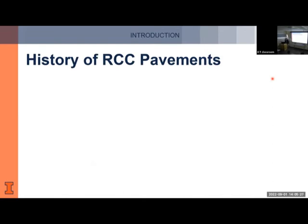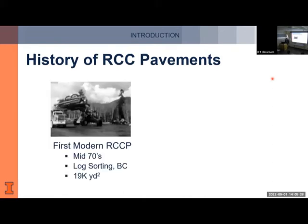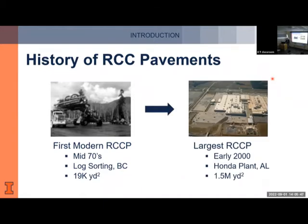Let's look at a brief history of RCC pavements. It's rather recent in the realm of pavements. The first modern RCC pavement was done in the mid-1970s for a log sorting yard in British Columbia, Canada — something pretty small at 19,000 square yards. Scaling up to today, the largest RCC pavement, built in the early 2000s for a Honda plant, is 1.5 million square yards. So within a few decades, this material has been blooming.